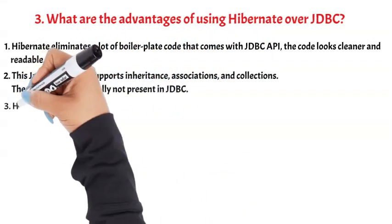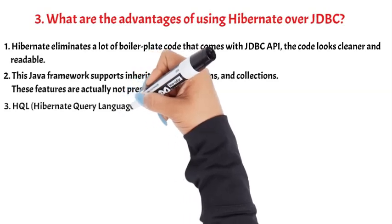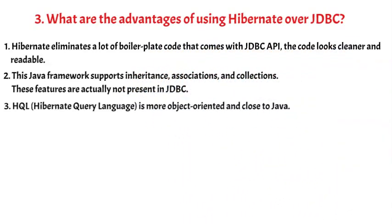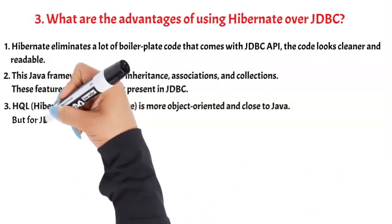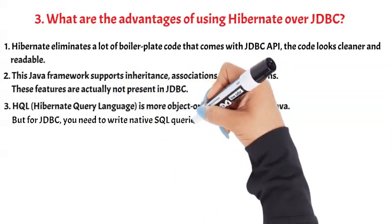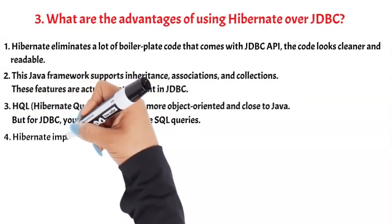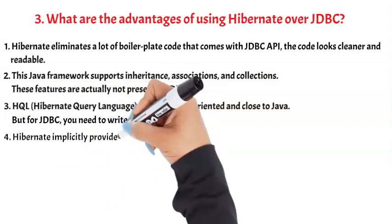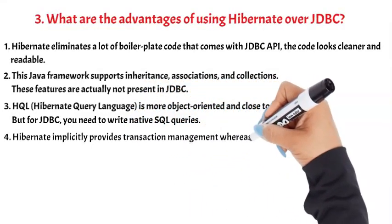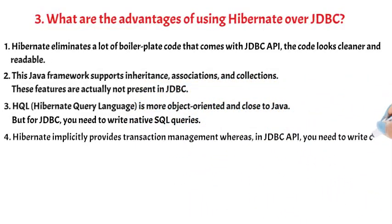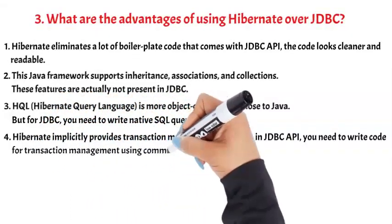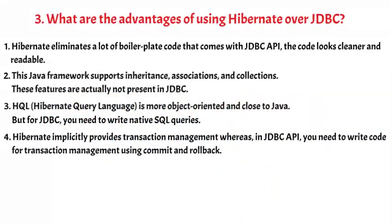Third, Hibernate Query Language (HQL) is more object-oriented and close to Java, but for JDBC you need to write native SQL queries. Fourth, Hibernate implicitly provides transaction management whereas in JDBC API you need to write code for transaction management using commit and rollback.